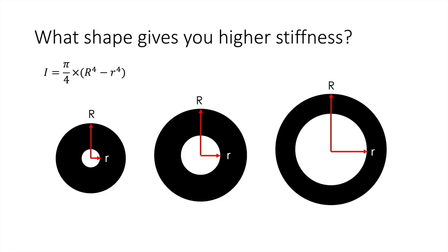Since we are talking about shape, we can ask: what shape gives us higher stiffness? Let's imagine three cylinders whose cross-sectional shapes have the same mass and volume. The shape with the higher value of I is the one with thinner walls, because it has a higher outer radius R. In this formula, I includes the fourth power of R, which grows very fast with outer radius. So the shape with the thinner walls gives us the higher value of I.